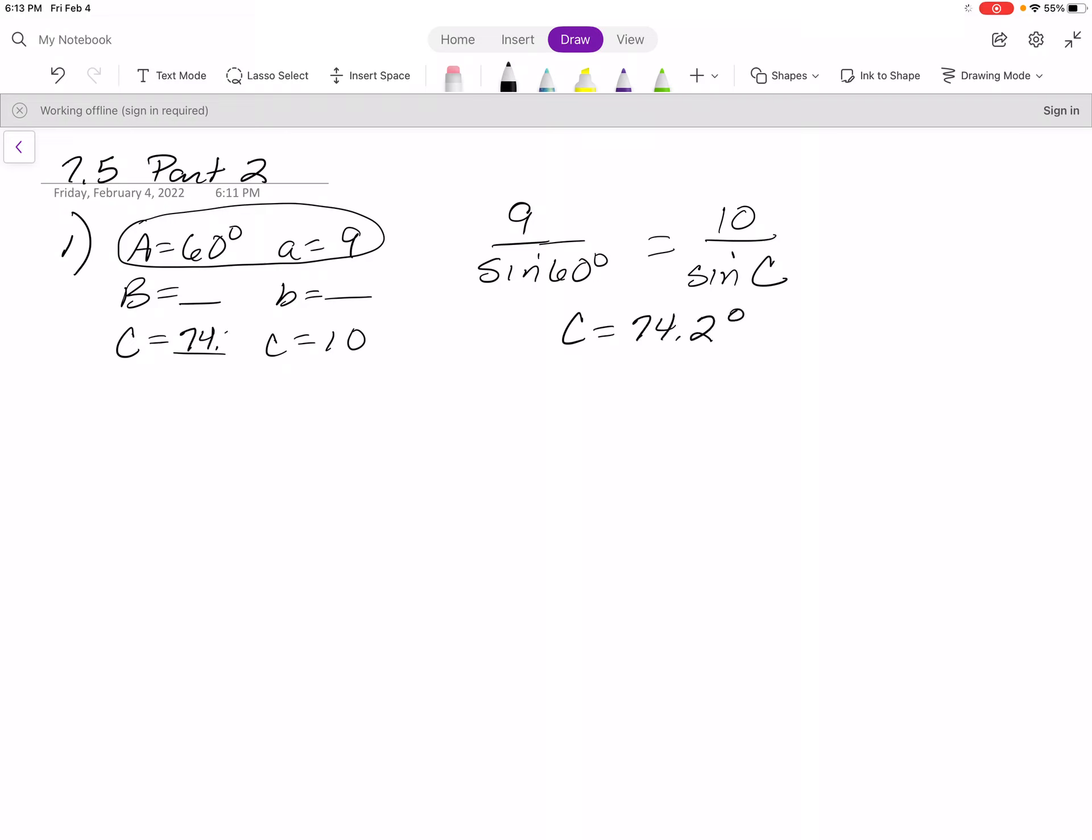Once you know that C is 74.2 degrees, it's just a matter of subtracting to get angle B, so that's 45.8, and then you can't use the Pythagorean theorem to solve for B. You're going to have to use the law of sines again, this time still using the 9 and the 60, but solving for side B, knowing that angle B is 45.8 degrees. That's easier because you don't even have to use the inverse sine. You just cross multiply and divide, and for that one you end up with B equaling 7.45.